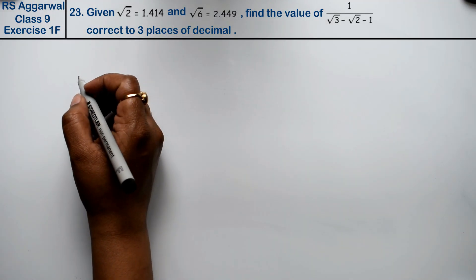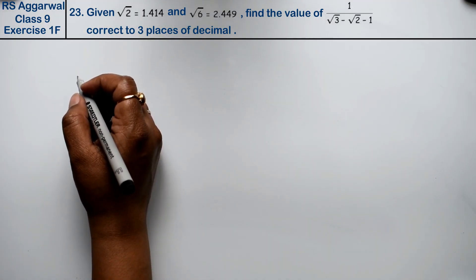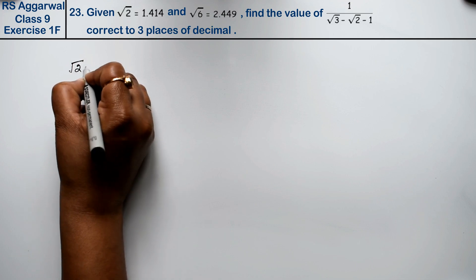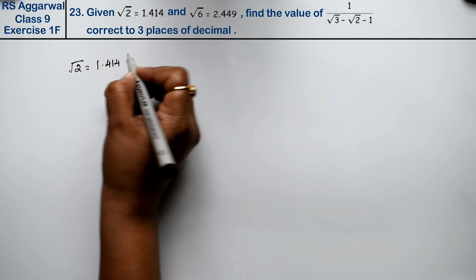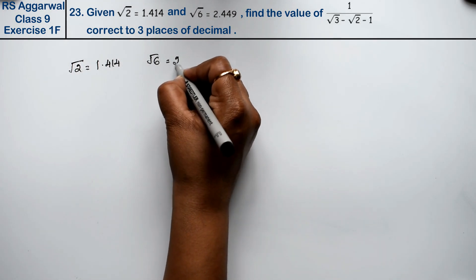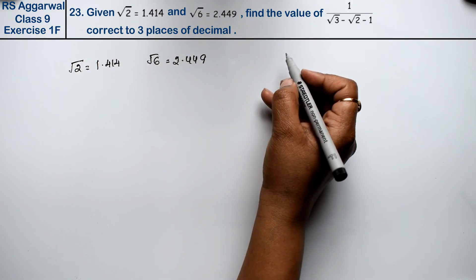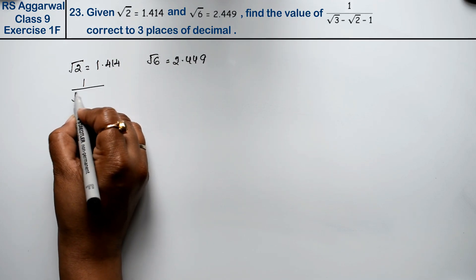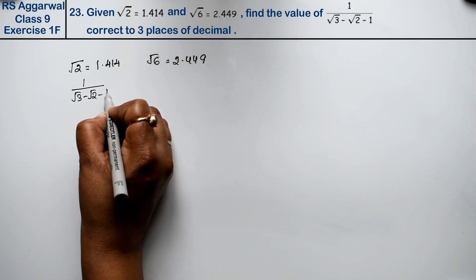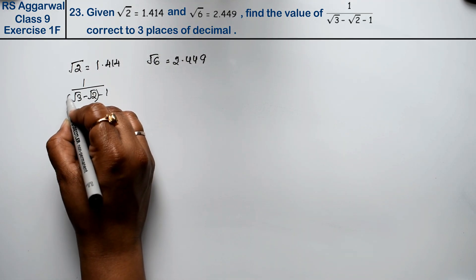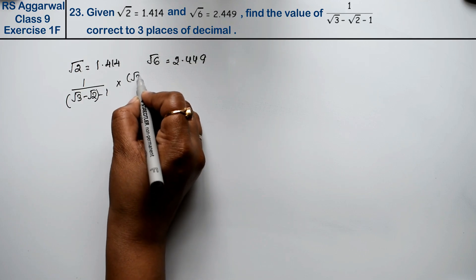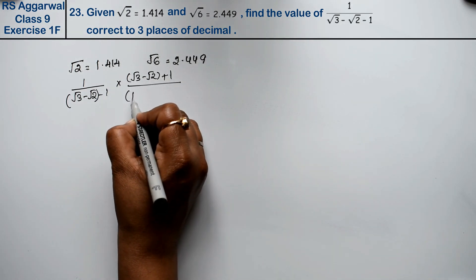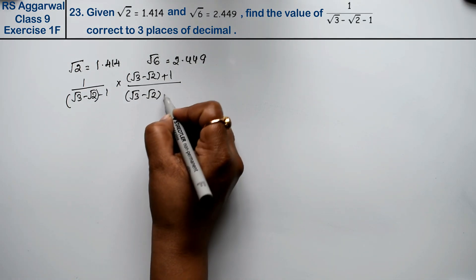Let's do question number 23 of Exercise 1F, that is Number Systems. Question number 23 is given: root 2 equals 1.414, root 6 equals 2.449. Find the value to 3 decimal places of 1 upon root 3 minus root 2. Here we will rationalize root 3 minus root 2 as it is, plus 1 upon root 3 minus root 2 plus 1.